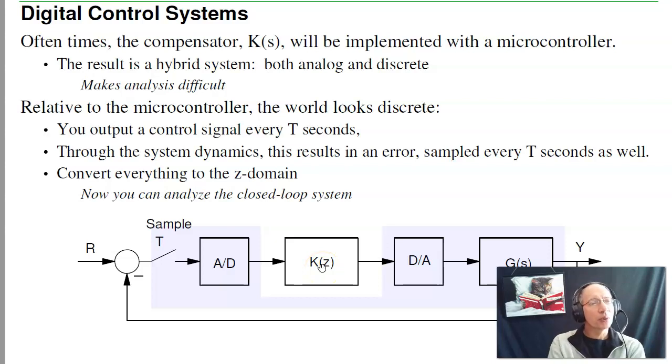What you can do is look at the world relative to the microprocessor. Relative to the microprocessor, every T seconds I output a signal. It does something, then comes back. I then read an analog input every T seconds. So relative to the microprocessor, the world is discrete.